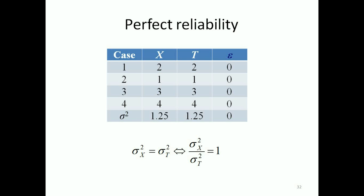If we have four cases where there is a true score of 2, 1, 3 and 4 there will be a variance of 1.25. Measurements could be perfectly accurate so we could have x meaning 2, 1, 3 and 4 which is exactly identical to the true scores and the variance is exactly the same 1.25. So the quotient gives you as you would expect 1. There's no error.